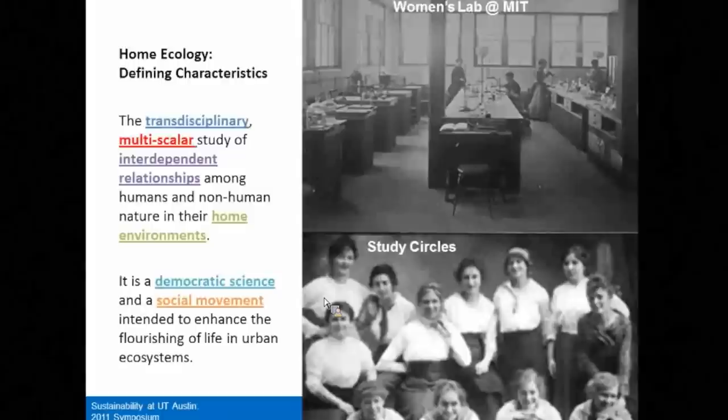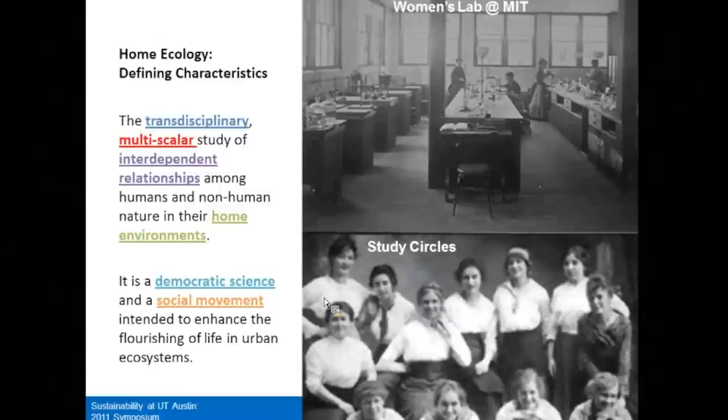She established the field of home ecology as a way to holistically address them. Home ecology has a number of key defining characteristics: it's transdisciplinary, engaging scholars from a range of disciplines along with non-academic partners in applied research. It employs systems thinking to address interrelated problems in complex urban environments. It's multi-scalar, investigating food, air, and water at scales from the household to the region.